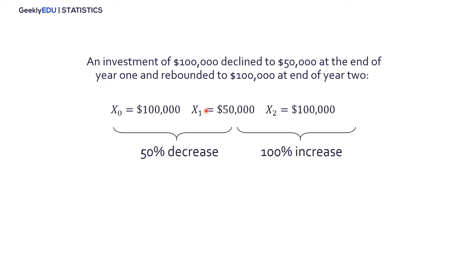Let's take a look at an example. An investment of $100,000 declined to $50,000 at the end of year 1 and rebounded to $100,000 at the end of year 2. So we want to figure out what's the geometric mean rate of return. Well, first, let's define our numbers.